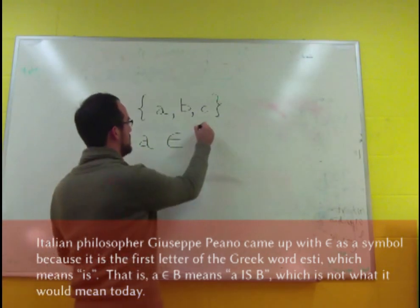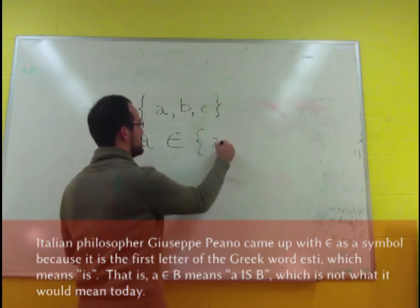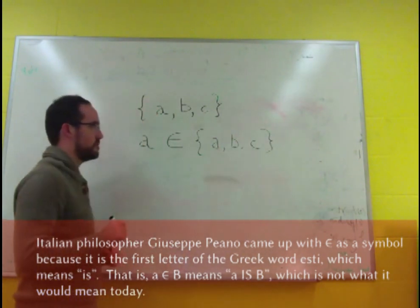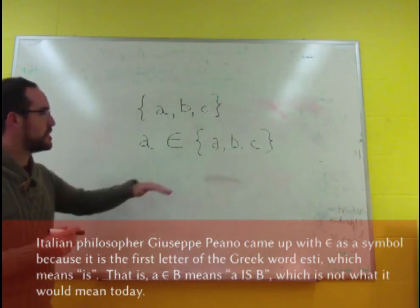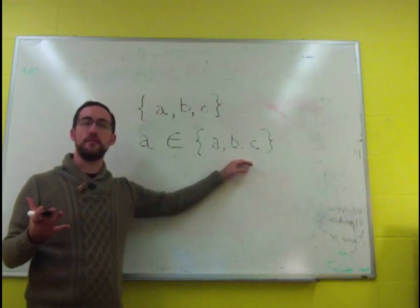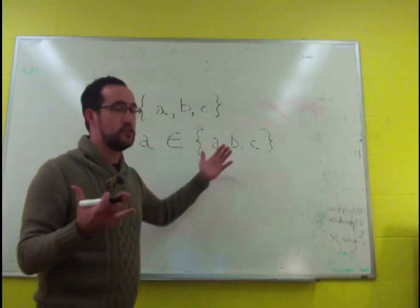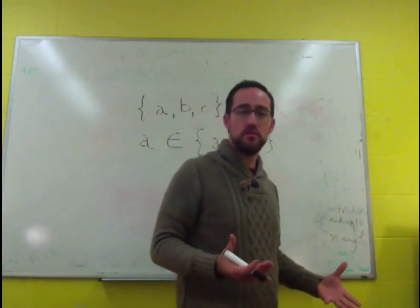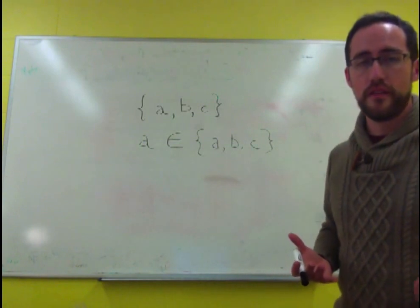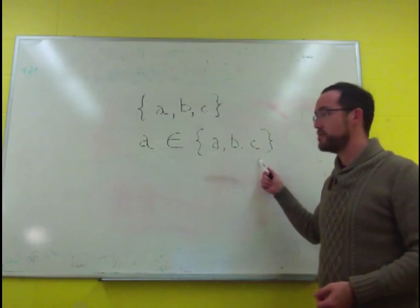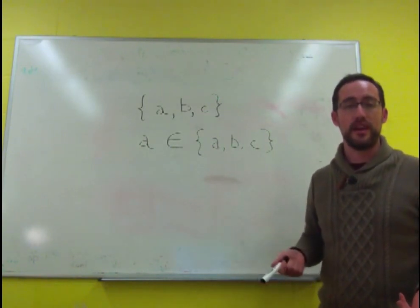But A is essentially in the set A, B, C. Now this is a set that's demarcated by listing all of its members. For a set that just has three members, that's not a problem. But when a set has a lot of members, then that becomes a bit of an issue. And so instead of just listing all the members, we can just write out its name.